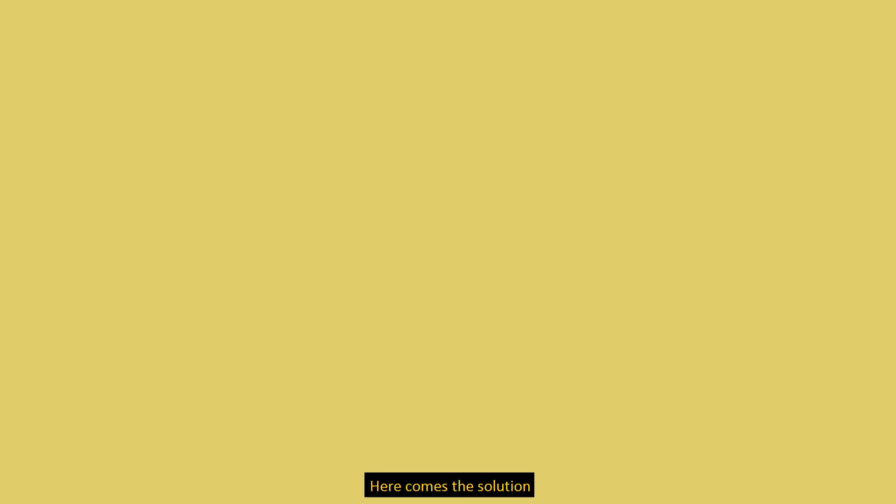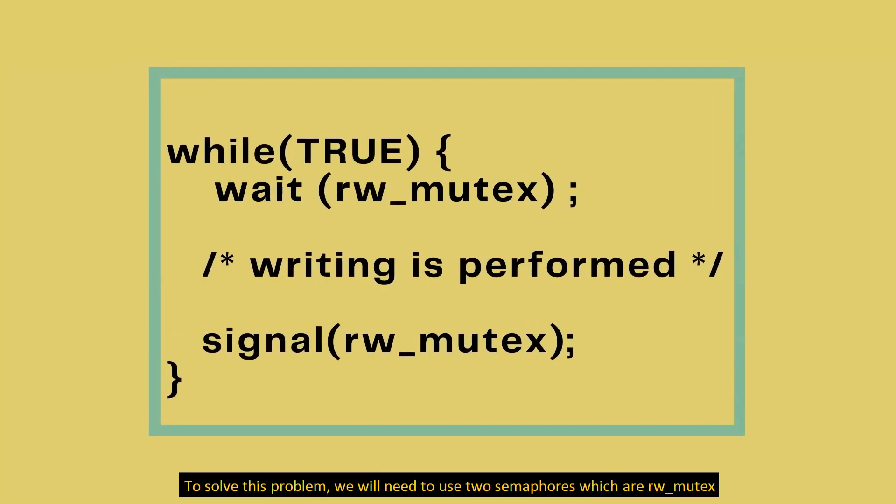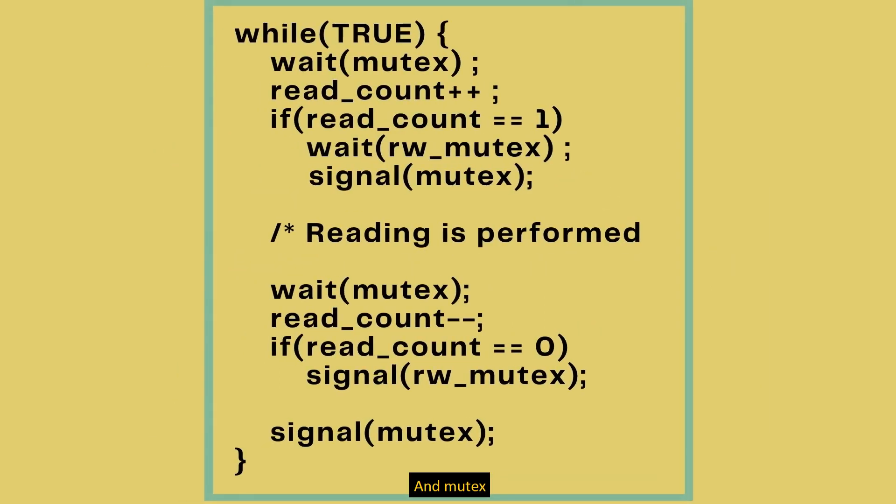Here comes the solution. To solve this problem, we will need to use two semaphores which are RwMutex and mutex.